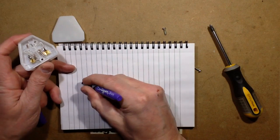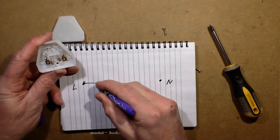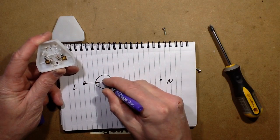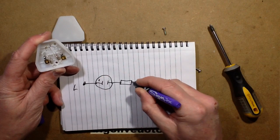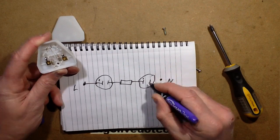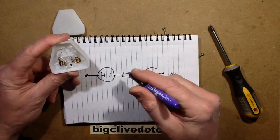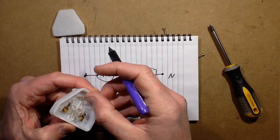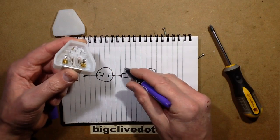So we've got live, we've got neutral, and we've got one neon indicator, a resistor, and then another neon indicator. These are just glass vials filled with neon gas with an electrode. The resistor, the color code for it is blue, gray, orange, which is 6, 8, and three zeros, so 68k.